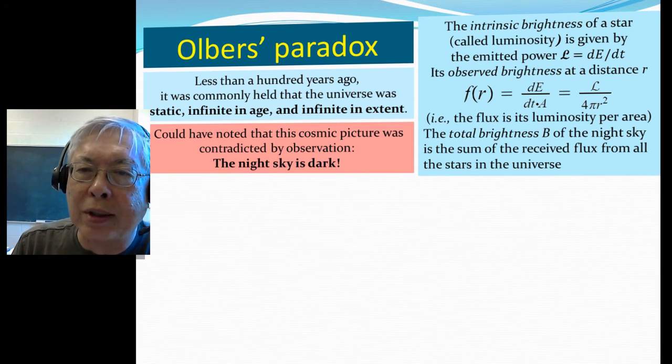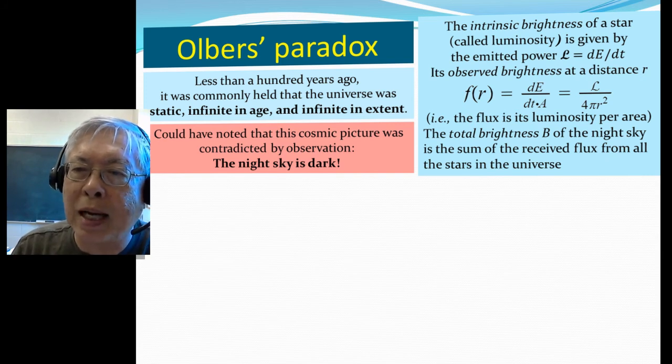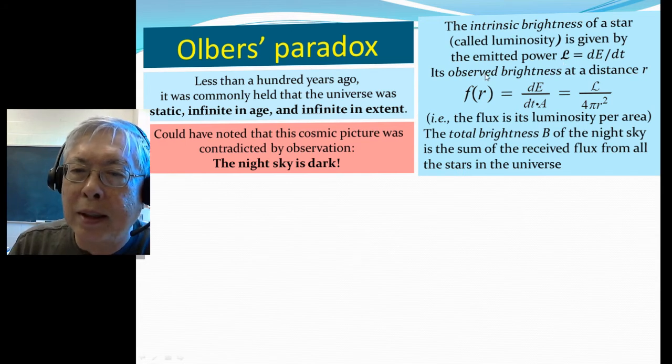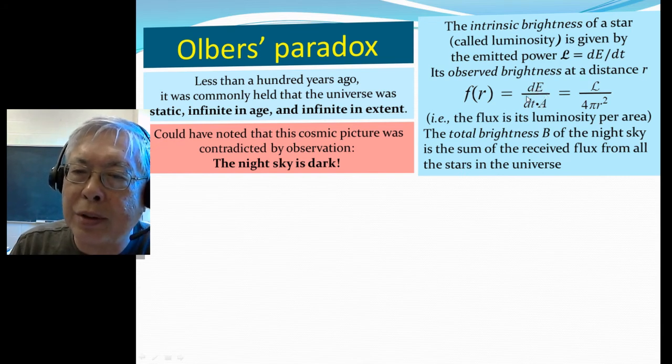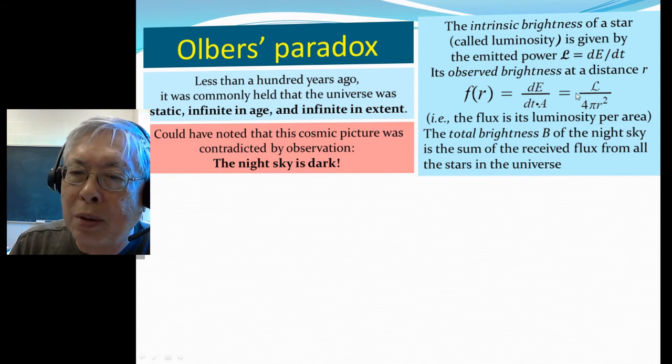The intrinsic brightness of a star, we call it luminosity, is defined to be the emitting power, which means the energy per unit time, the amount of energy emitted per unit time, so we call it luminosity. The observed brightness at the distance r of such a star is given by the amount of energy we see per unit time, per unit area. Since the rate of energy per unit time, that's power, that's the luminosity, so this is really the flux, which is luminosity per unit area.